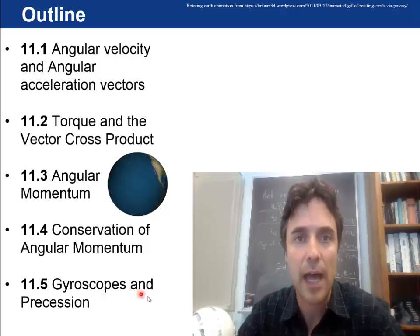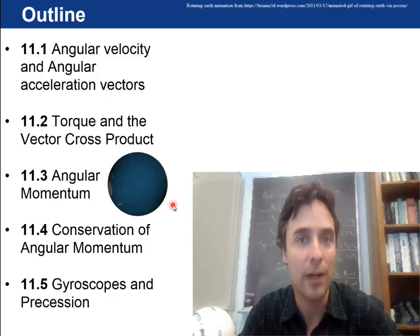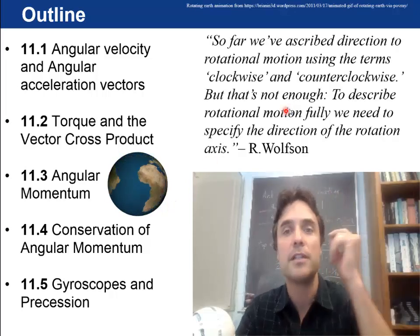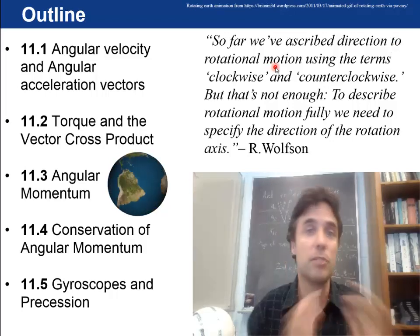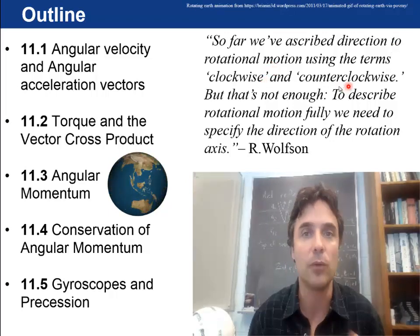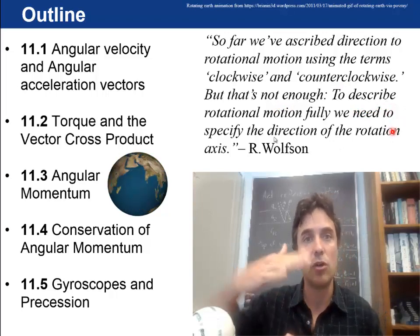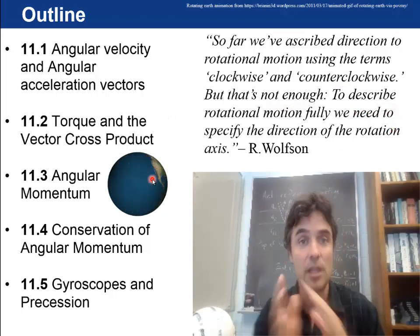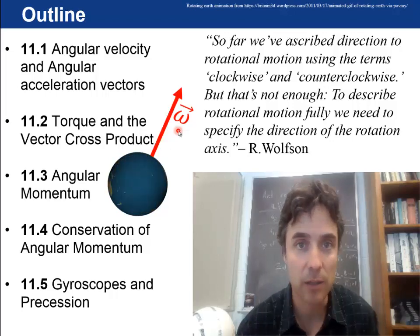I have a little demonstration for that. You can see we've got the spinning earth there, and the quote above is that so far we've ascribed direction to rotational motion by just saying clockwise or counterclockwise, but that's not enough. If we want to talk about that rotating earth, it would be nice to know where the plane of rotation is and where the axis is, and so we're going to come up with a vector for angular velocity.